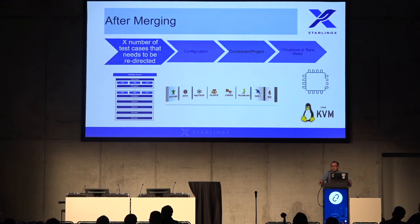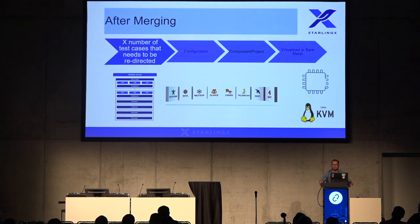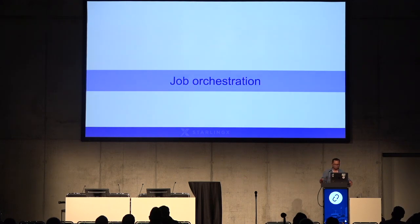But what happens after the merging part? We need to identify those test cases in order to split them into different configurations, into different components. And if we want, we can identify if a test case is going to be executed on a virtual environment or a bare metal environment. So I think that we are ready for the first phase — the test code development using Zuul as a gatekeeper. We can move to the second phase, using Zuul as a job orchestrator.